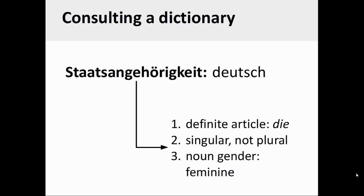Finally, you can always consult a dictionary or the module vocabulary list to determine the definite article of a German noun. Looking up Staatsangehörigkeit in the vocabulary list will reveal that it is preceded by the definite article die, which means that it could be either a singular feminine noun or a plural noun.